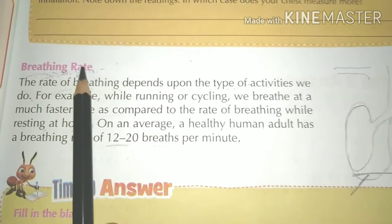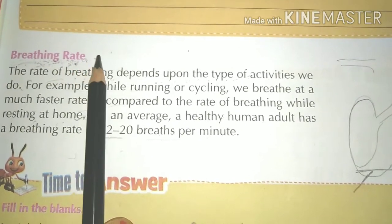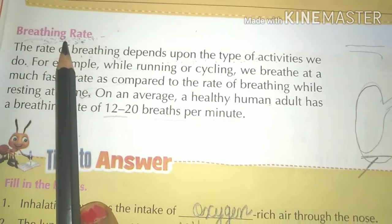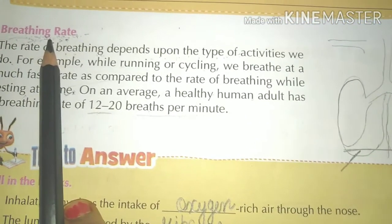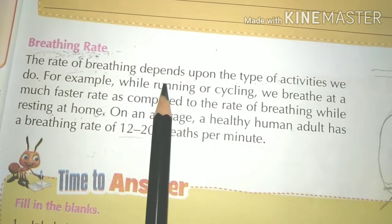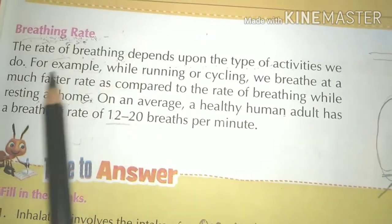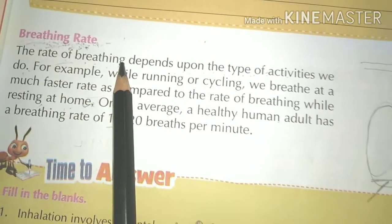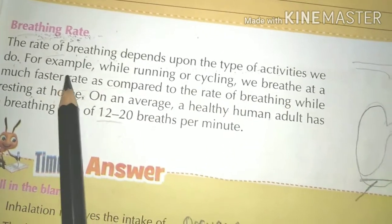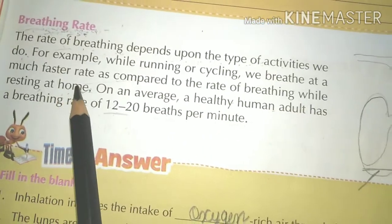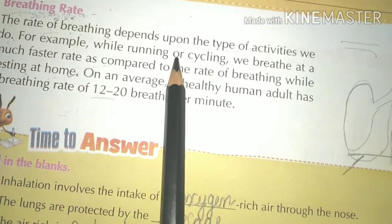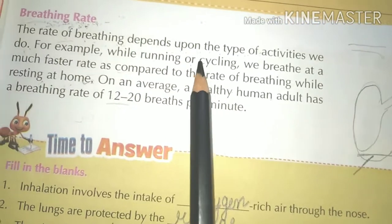Our next topic is breathing rate, also known as respiratory rate. The respiratory rate is the rate at which breathing occurs, usually measured in breaths per minute. The rate of breathing depends upon the type of activities we do. For example, while running or cycling, we breathe at a much faster rate compared to when we are resting at home. When we do hard physical activity, our breathing rate increases.